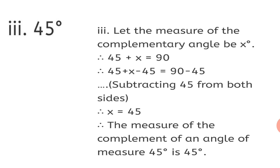Third: 45 degrees. Following the same steps — let the measure of the complementary angle be x degrees. Therefore, 45 plus x equals 90. Subtracting 45 from both sides: 45 plus x minus 45 equals 90 minus 45. Therefore, x equals 45. The measure of the complement of an angle of measure 45 degrees is 45 degrees.